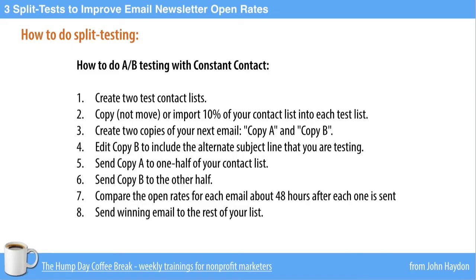Constant Contact is a little bit different. You're going to create two test contact lists, and then copy 10% of your contact list into each test list. I'm not going to get into the details on Constant Contact or any specific email marketing tool — any email marketing tool will allow you to do split testing. The way that you implement it is going to be different for each vendor, so if you're wondering how to do it with your email marketing vendor, just contact support and you'll get some really easy-to-follow instructions.